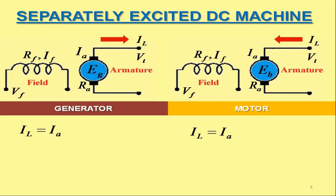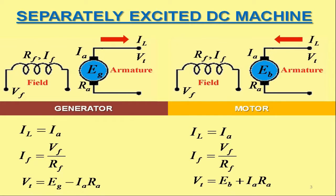The field current IF can be calculated by dividing field voltage VF by field resistance RF for both separately excited DC generator as well as DC motor. In case of separately excited DC generator, the terminal voltage VT can be calculated by subtracting the armature voltage drop IA·RA from the generated EMF EG. On the other hand, in case of separately excited DC motor, the terminal voltage VT can be calculated by adding the armature voltage drop IA·RA into the back EMF EB.